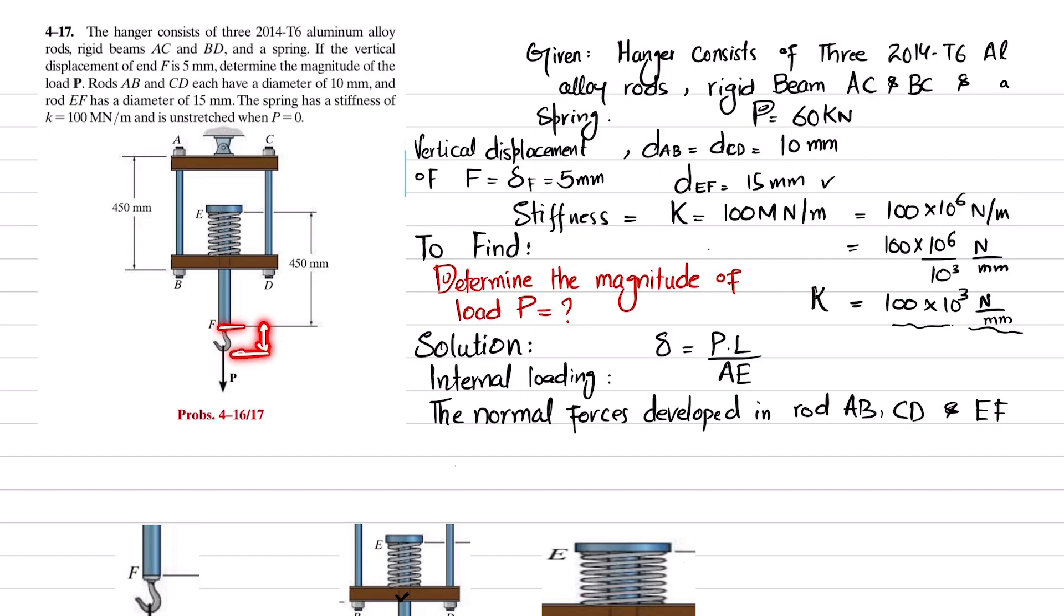This load P is applied at this point. Due to this load, this point moves 5 millimeters downward. So what we have to find is this applied load P. Let's start with the solution.